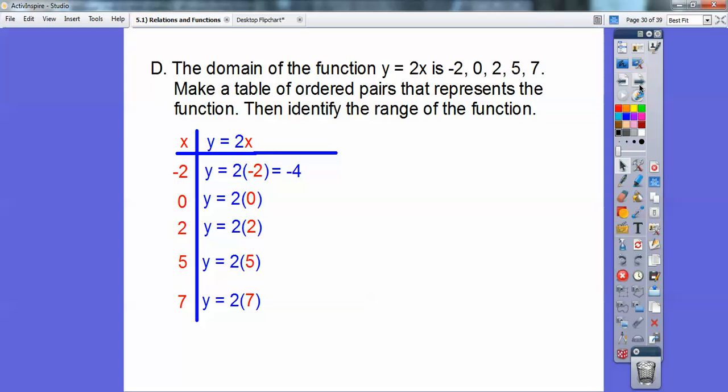Go ahead and extend that table out, and then 2 times negative 2 is negative 4. So keep going. And then it's going to give you this ordered pair, negative 2 comma negative 4, X comma Y. This is my Y, so negative 2, negative 4.